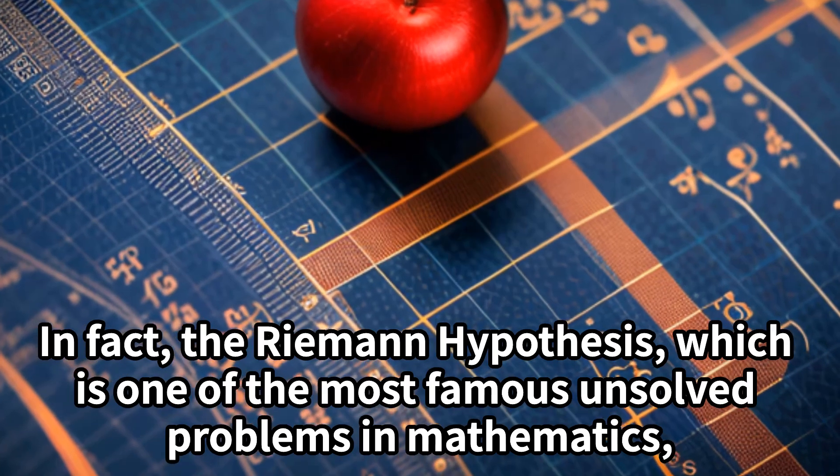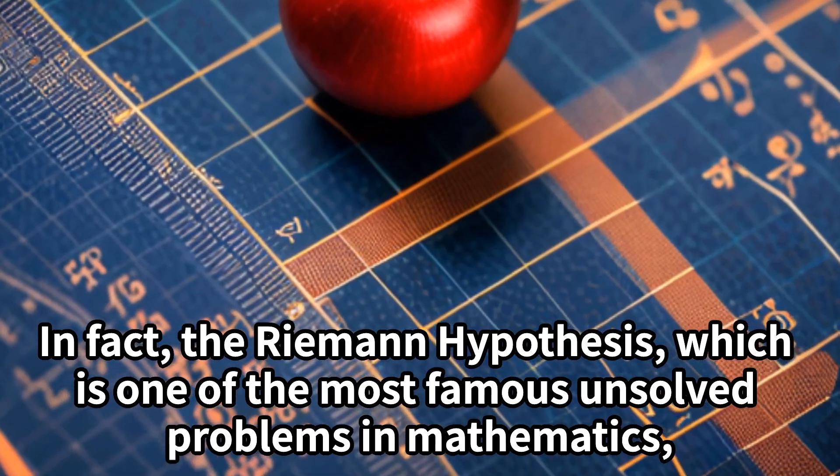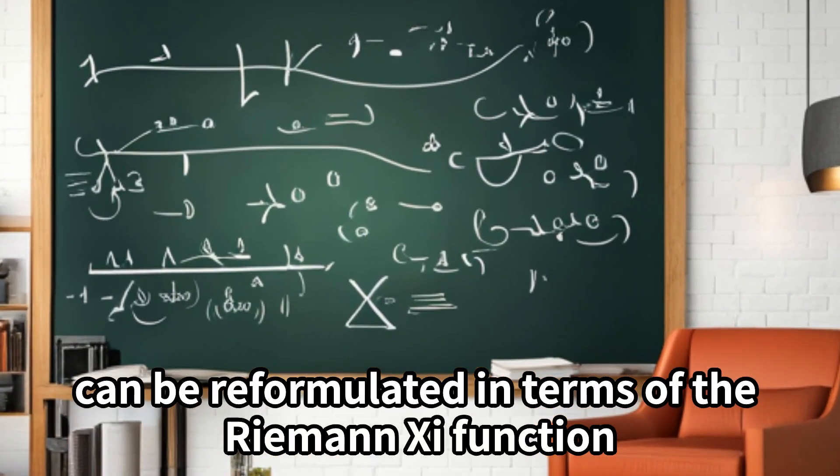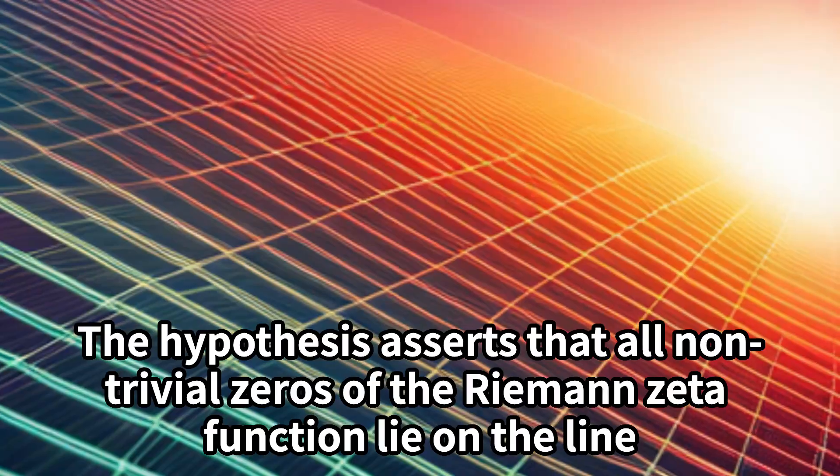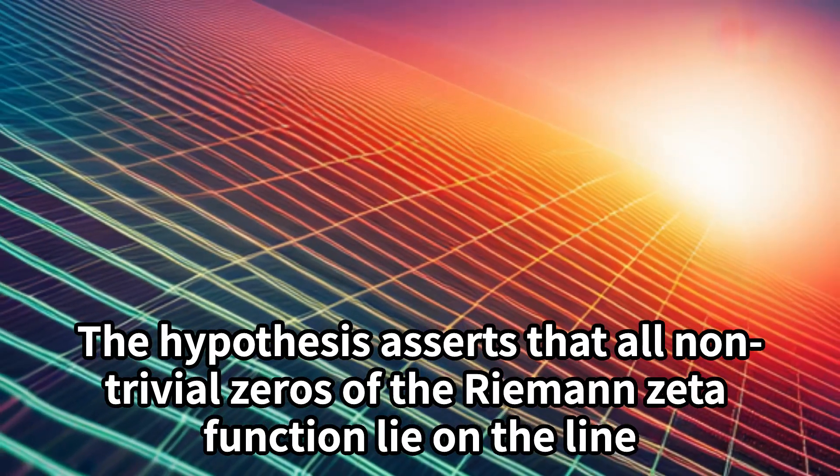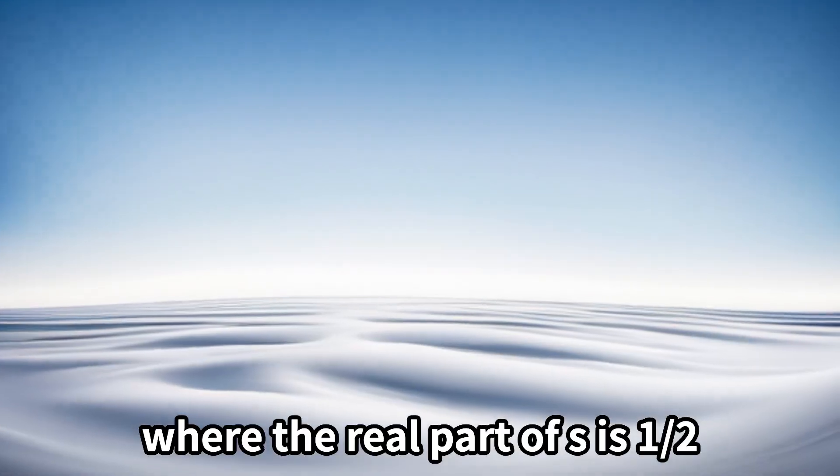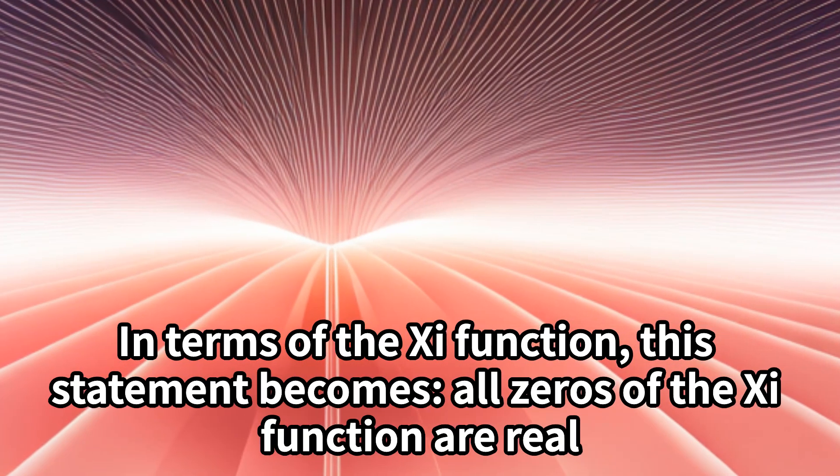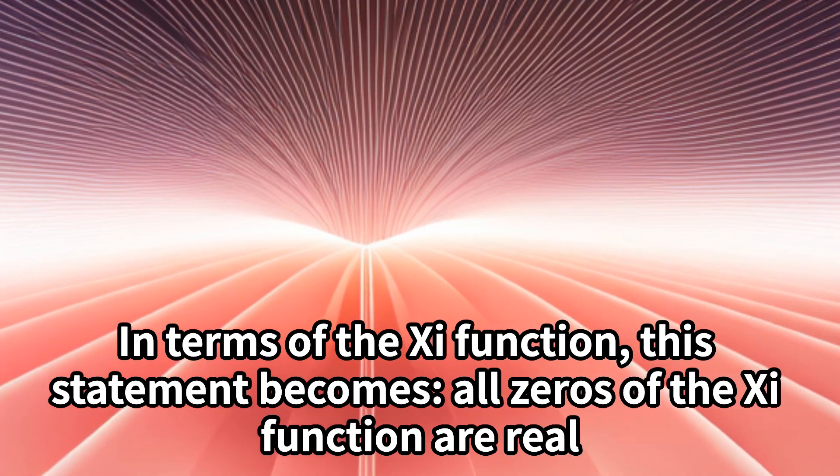In fact, the Riemann hypothesis, which is one of the most famous unsolved problems in mathematics, can be reformulated in terms of the Riemann-Chi function. The hypothesis asserts that all non-trivial zeros of the Riemann-Zeta function lie on the line where the real part of s is 1/2. In terms of the Chi function, this statement becomes all zeros of the Chi function are real.